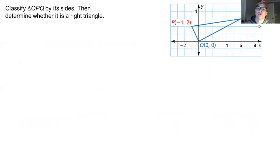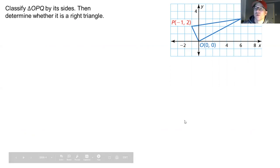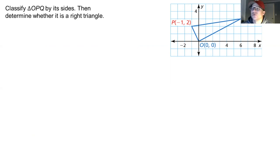Let's look at our first example, applying these relationships to coordinate points when plotting triangles. You have triangle OPQ with coordinate points (0,0), (-1,2), and (6,3), and we need to determine if this is a right triangle.